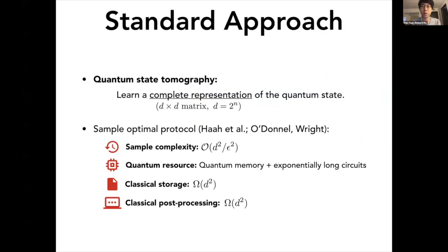The standard approach for this task is quantum state tomography, where you just learn the complete full representation of the quantum system given by an exponentially large matrix. Due to this, even the sample optimal protocol requires the number of copies that scales exponential in system size. So you have to look at d squared over epsilon squared number of the quantum system in order to construct this full representation. And furthermore, all other properties are exponential.